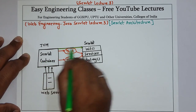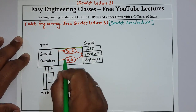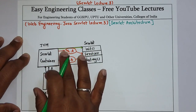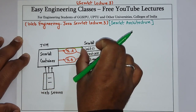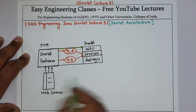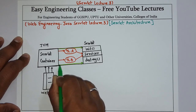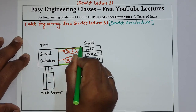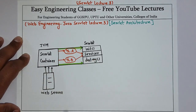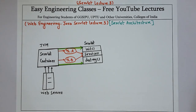First, the servlet container will initialize — that is, it will create the servlet — and for each request a thread is created which calls the service method of the servlet created by the init method. When the servlet needs to be destroyed, the servlet container will call the destroy method. That is how the servlet works — this is the architecture of the servlet.